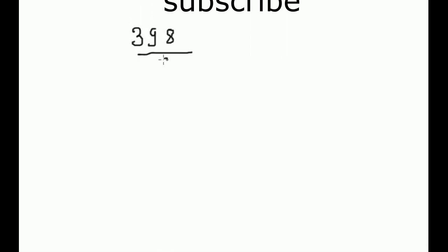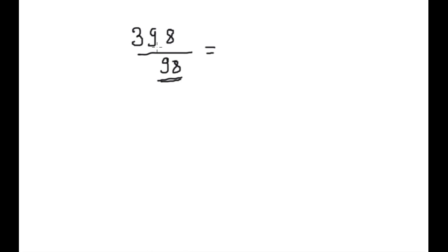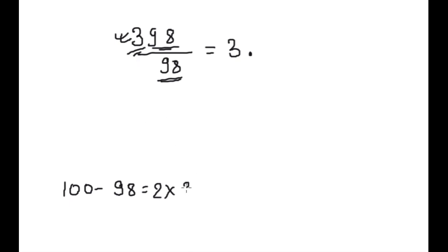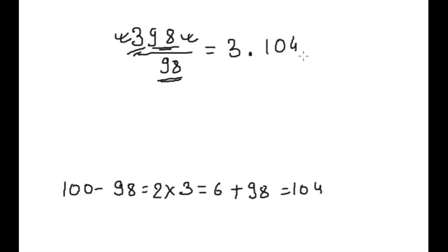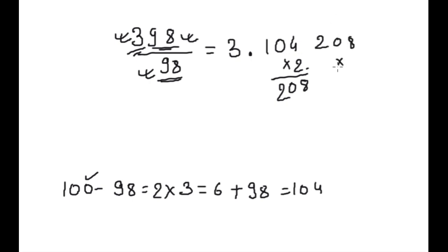Next example: 398 × 98. Step 1: this is 2-digit, this is 2-digit, extra is 3, we write 3 here. Now 100 minus 98 equals 2, into this 3 equals 6, plus 98 equals 104 — that is 3-digit. It should be 2-digit, so multiply by 2 — because 98 is 2 less than 100 — giving 8, 0, 2, written as 2, 0, 8. This is still 3-digit, so one more step: multiply by 2 again giving 6, 1, 4, written as 4, 1, 6.